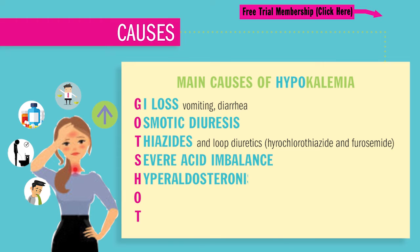H is for hyperaldosteronism. Too much aldosterone is produced by the adrenal glands that sit on top of our kidneys, which leads to lower levels of potassium in the blood and increased alkalosis, which is more of a basic state.